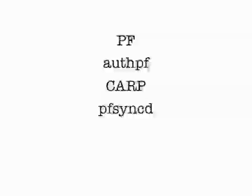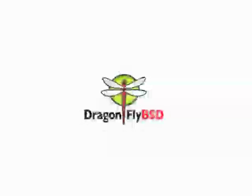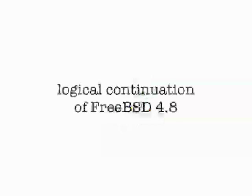Some other features that OpenBSD has given us over the years: PF, OSPF, CARP, PFSYNC — a number of these are probably in FreeBSD by now. Dragonfly BSD is a logical continuation of FreeBSD 4.8 — it was a fork intended to basically overhaul the SMP features found in FreeBSD 5, 6, and 7. Dragonfly has some really neat technological goals, but their headline features are harder to pin down.